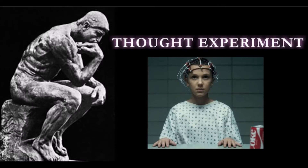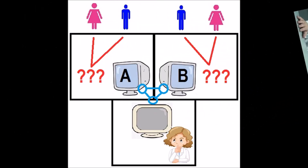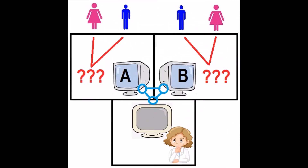So here's the thought experiment. The goal of the interrogator is to determine who is male and who is female. One of the participants is actually male and one is actually female. Since the rooms are soundproof and the interrogator can't see into the other room,